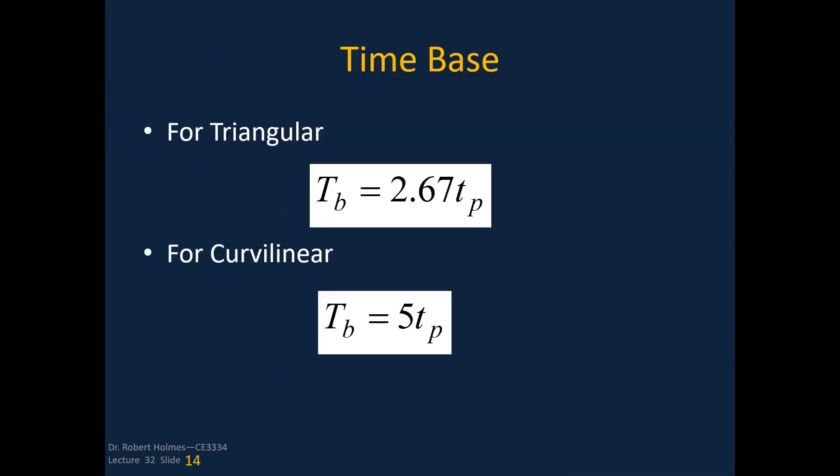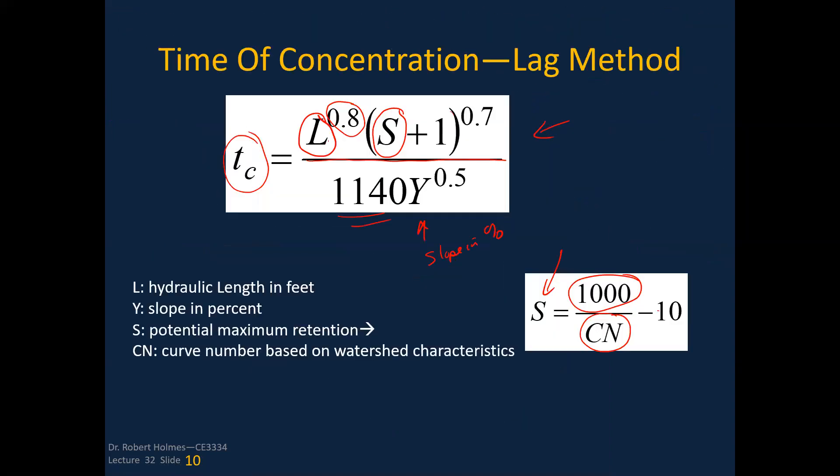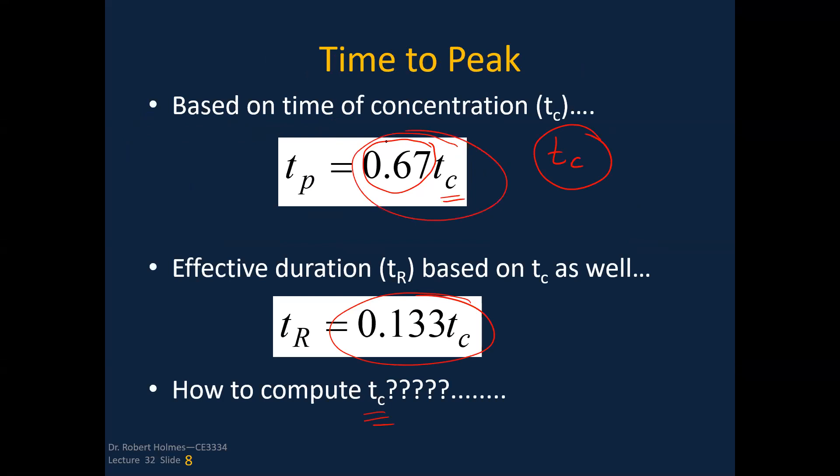Let's talk about the time to base. If we're triangular, that time to base is going to be 2.67 times T_p. That time to base, if I look at the triangular unit hydrograph: this is zero, this is one. This is t over t_p. Then I've got two and this is 2.67. If it's curvilinear, it goes something like this, it comes out all the way out here to the value of five. That's what we're talking about there for our time to base. That T_p is going to be equal to two thirds the value of the time of concentration.